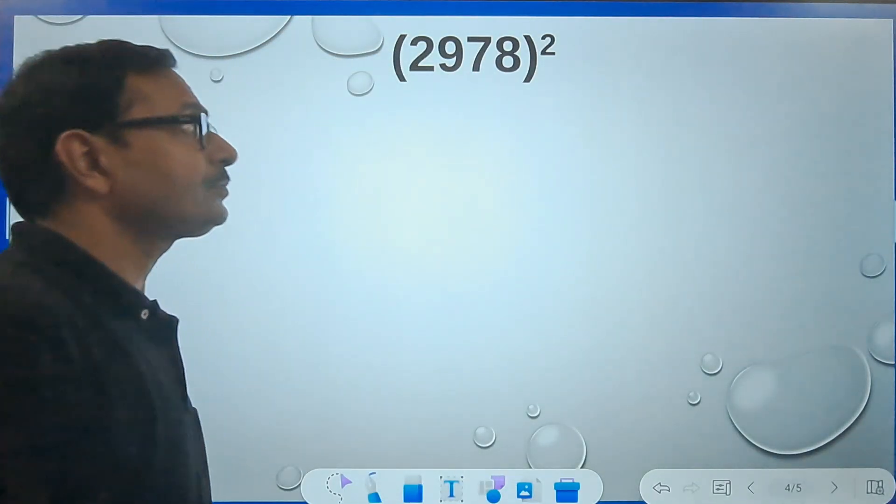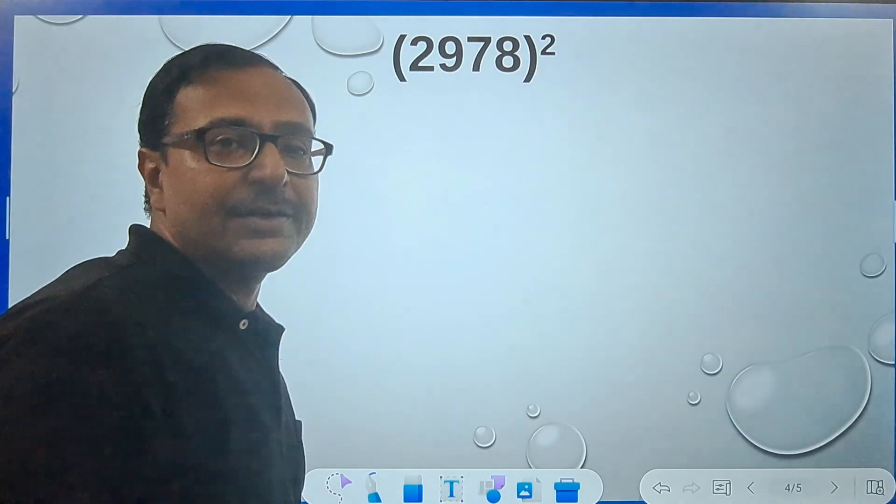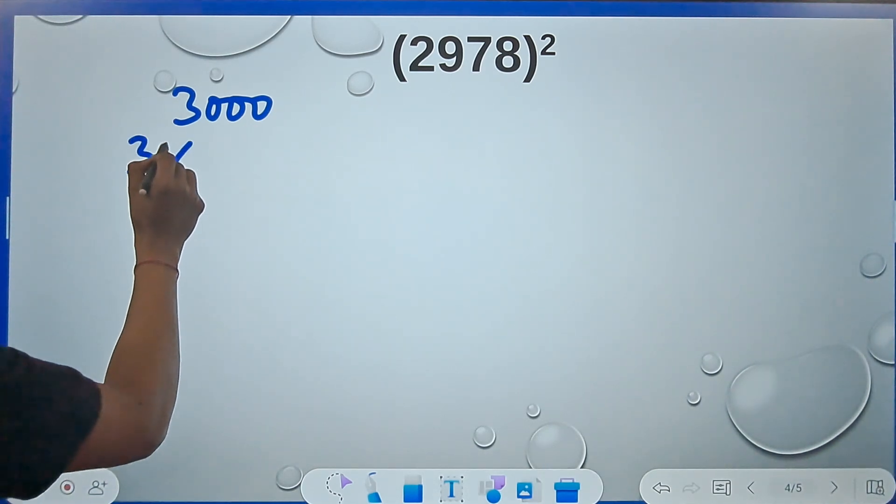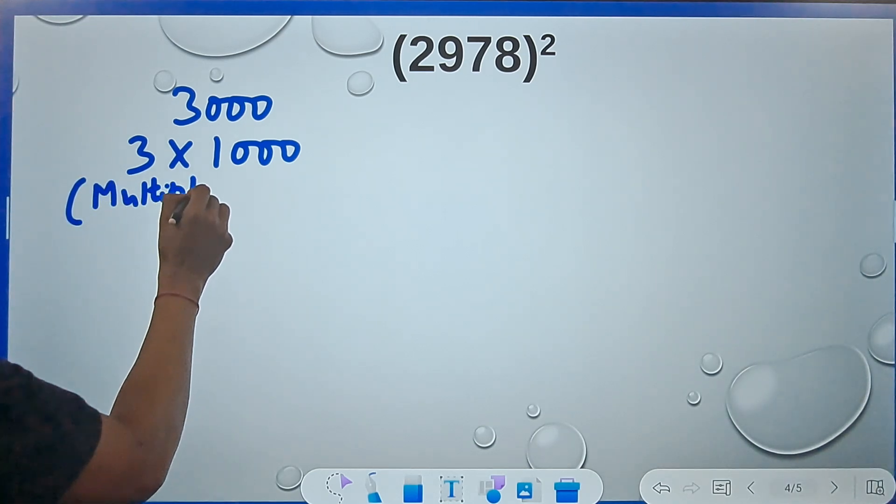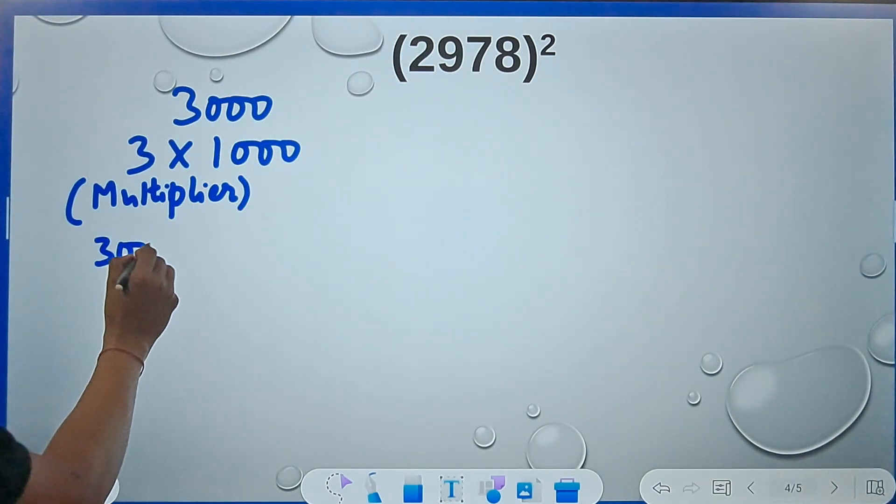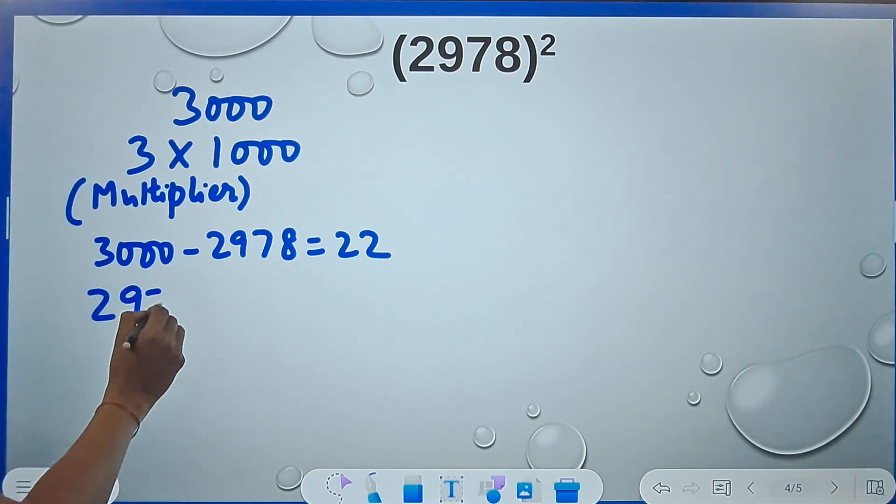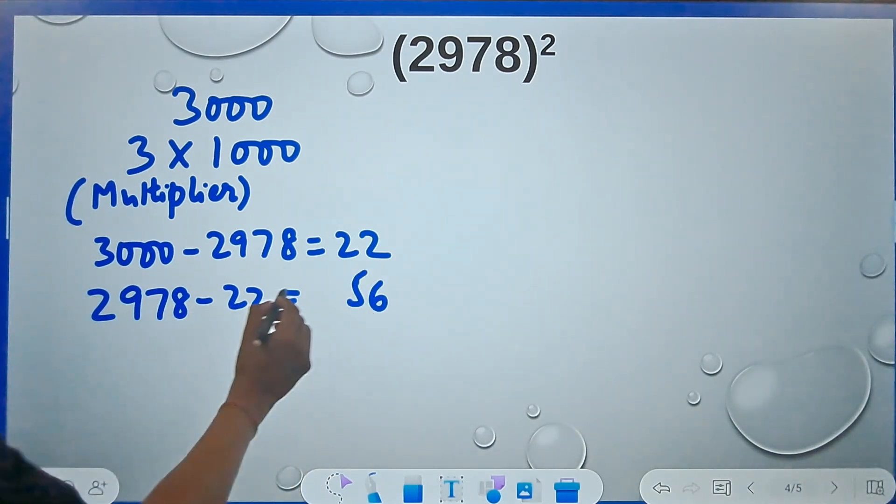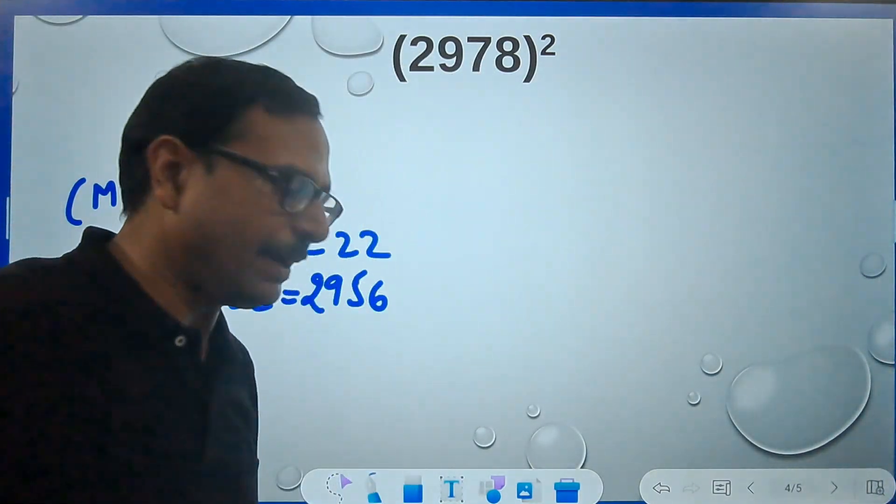Let's take more questions of the same concept. Here we have a big number now, 2978 square. I know that this number is close to 3000, and 3000 is 3 times 1000, so this 3 becomes my multiplier. Now what do I have to do? I have to check the deficit of this number from 3000. So if you subtract 3000 and 2978 you will get 22. Subtract 22 from the number 2978, you will get 2956.